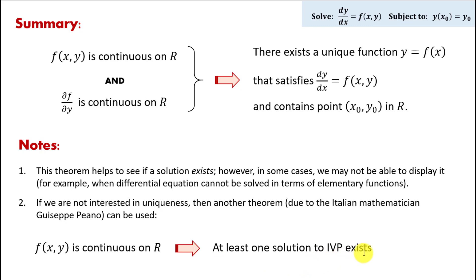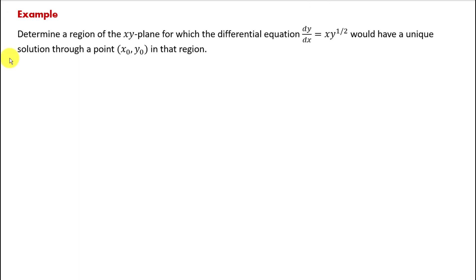Now, to make a bit more sense out of this theorem, let's do an example. We need to determine a region of the xy-plane for which the differential equation dy/dx equals x times y to the power one-half would have a unique solution through any point x sub 0, y sub 0 in that region. Instead of showing that the IVP has a unique solution on a certain region, we need to find the region on which the given equation would have a unique solution at any point.